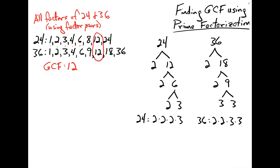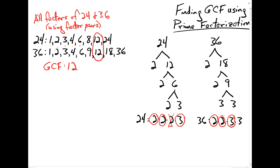Once I have my prime factorization of my two numbers, I go through and find the prime factors that match. Here's a prime factor of 2 in 24 that matches with another prime factor of 2 in 36. I notice I've got another prime factor of 2 in 24, but I don't have one in 36, so I'm not going to choose that one. I do, however, have a prime factor of 3 in 24 and a matching prime factor of 3 in 36.